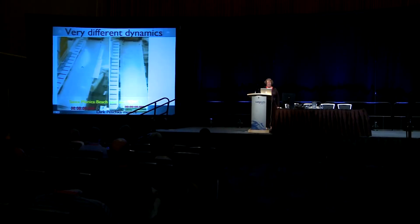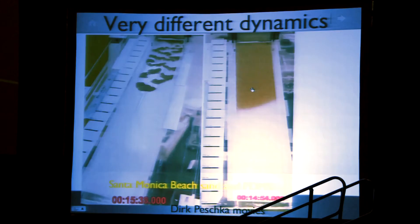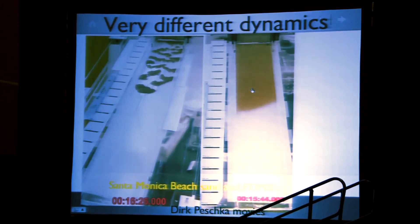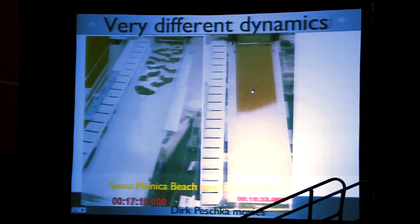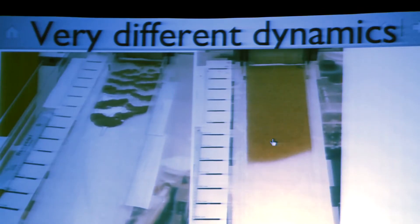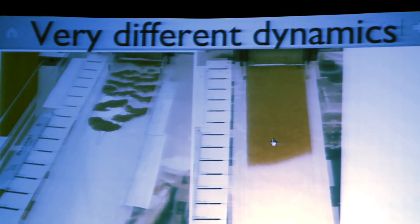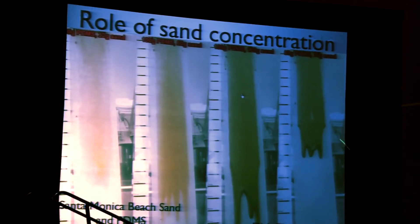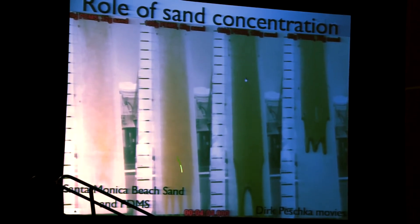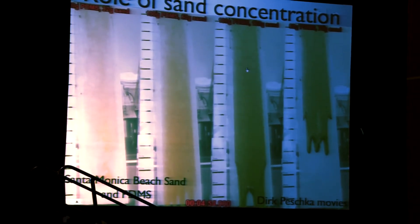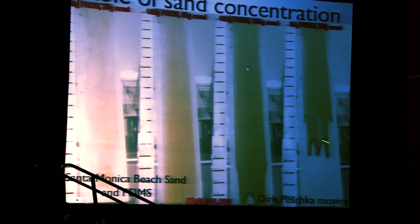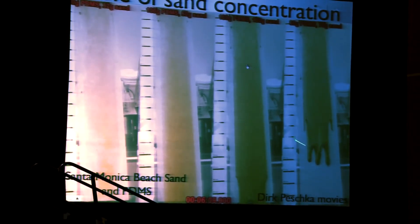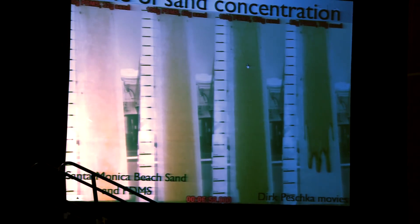We picked up some sand off of the beach and we mixed it with our silicon oil — this is polydimethylsiloxane mixed with beach sand. In this example, the beach sand is clumping up with pockets of oil in between the clumps. These two samples just have different volumes — different concentrations of sand. So we want to understand and be able to model those kinds of behaviors.